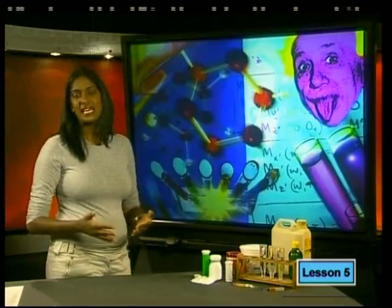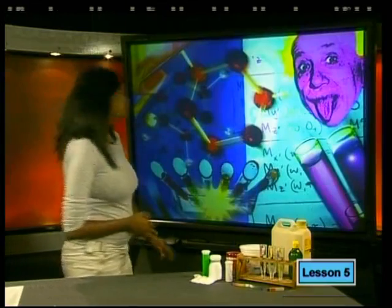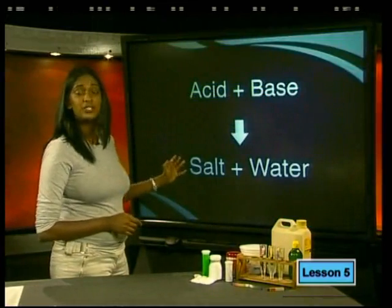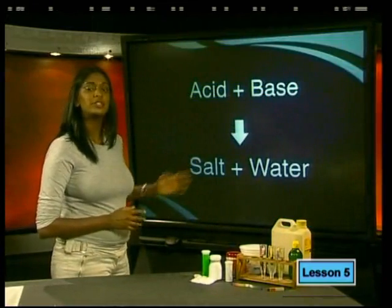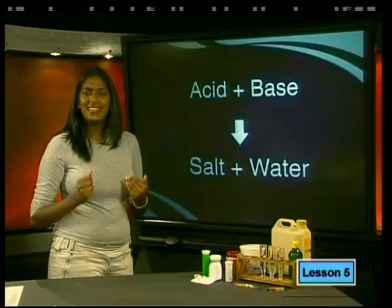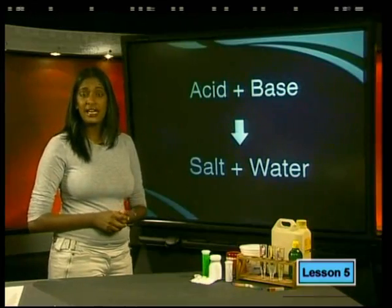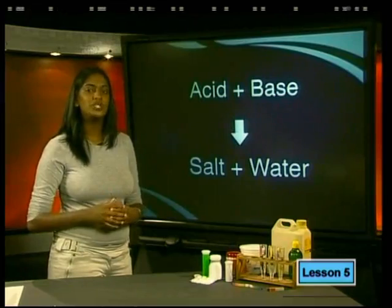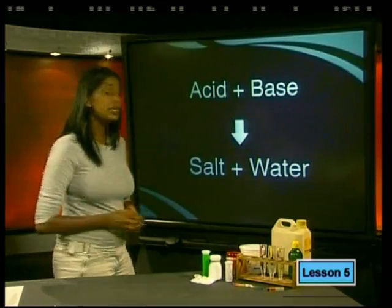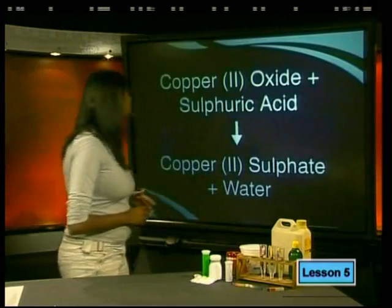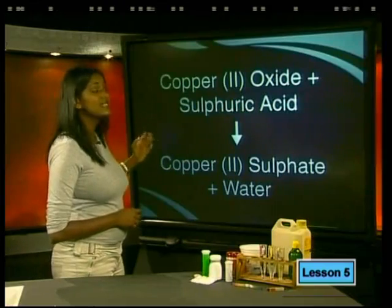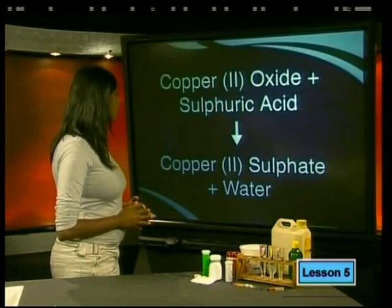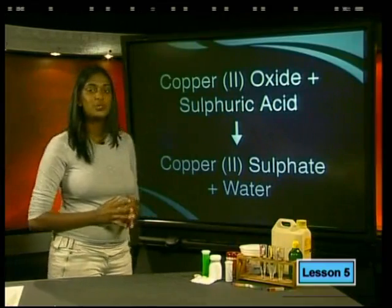In this case, the general equation is: an acid plus a base react to form a salt plus water. The acid we need is sulfuric acid, and the base we need is copper-2-oxide. So the word equation is: copper-2-oxide plus sulfuric acid react to form copper-2-sulfate plus water.